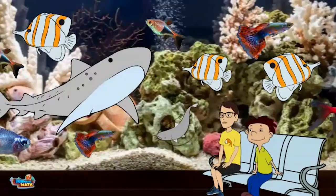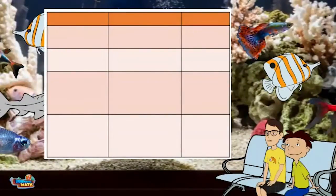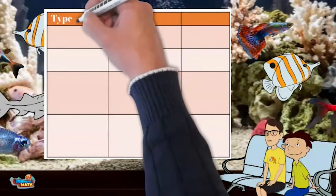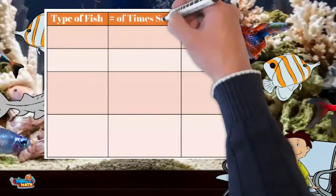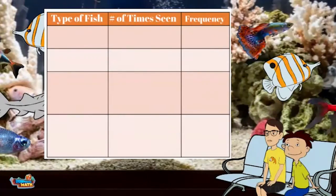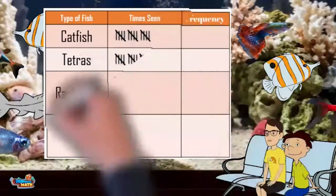I use something called a frequency table to keep track of all of that. I start by making three columns. The headings are: type of fish, number of times seen, and frequency. Then I write the name of the fish I will watch for today under the type of fish column.